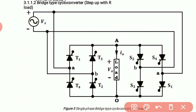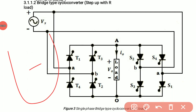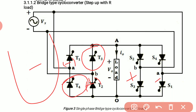During the negative half cycle of AC input, terminal A will be negative and B is positive. Due to this, thyristor T3 and T4 will conduct in one thyristor set, and thyristors S3 and S4 will work in the other thyristor set.